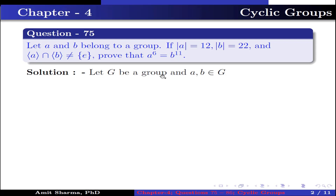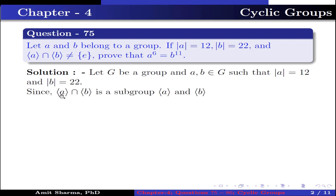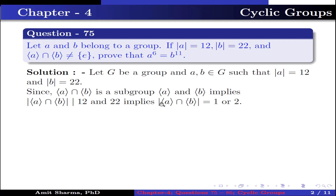Let G be a group and A, B belong to G such that order of A is 12 and order of B is 22. Since the group generated by A intersection the group generated by B is a subgroup of both, the order of that intersection divides both 12 and 22. Thus, the order is either 1 or 2.